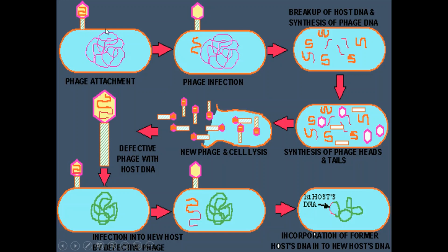In the diagrammatic elaboration of transduction: the phage attaches to the bacterial cell and injects its DNA. The DNA of the host cell breaks up and synthesis of phage DNA takes place; new DNA fragments are formed. Synthesis of phage heads, capsules, and tails also takes place, and new phage cells are released from the bacterial cell through cell lysis. The defective phage carrying host DNA then injects its DNA into a new bacterial cell, where integration of the former host DNA into the new host chromosome takes place.